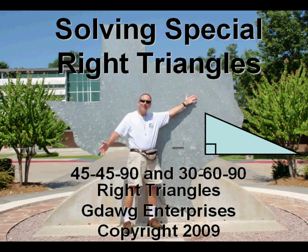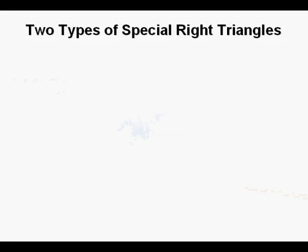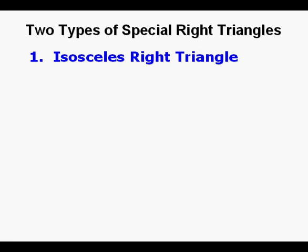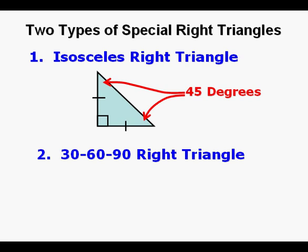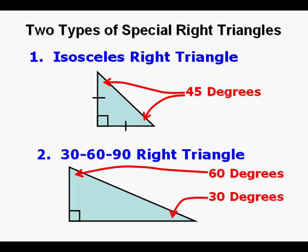Solving special right triangles: 45-45-90 and 30-60-90 right triangles. We're going to examine two types of special right triangles today: an isosceles right triangle where you have two 45 degree angles and two sides equal, and secondly a 30-60-90 right triangle where one angle is 30 degrees, one is 60 degrees, and of course the other is 90 degrees.